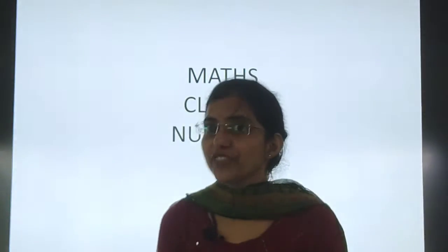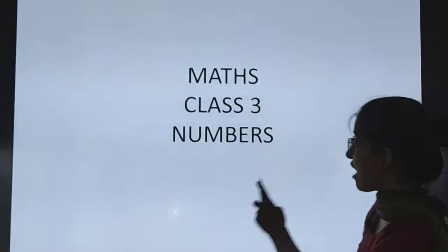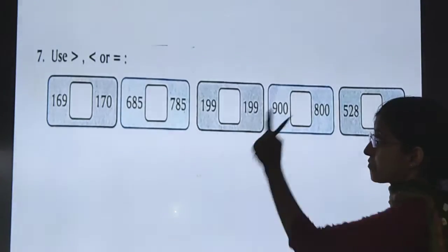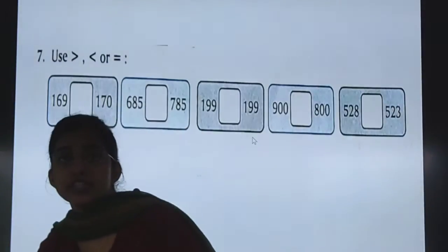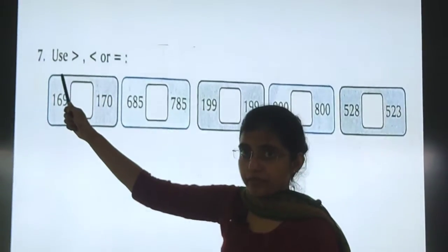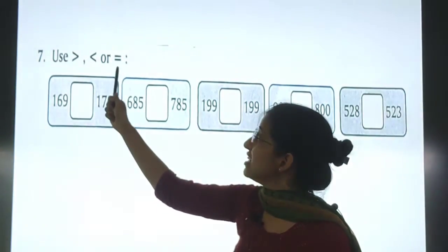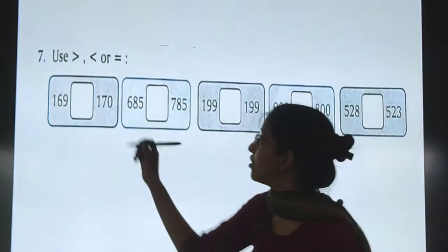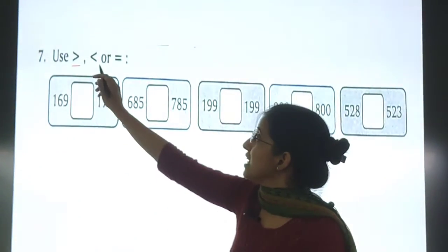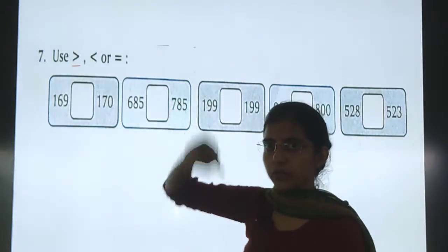So children, we were playing with numbers, right? We have completed all these things, expanded form and everything. Now we will do question number 7. That is, use greater than, less than or is equal to. Isko hum kya pronounce karte hai? Greater than, less than or equal to.